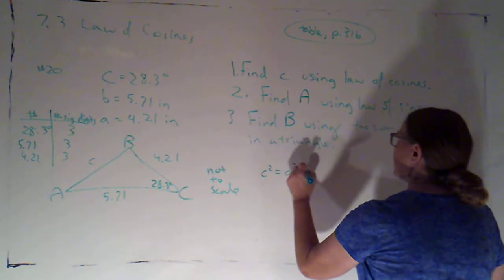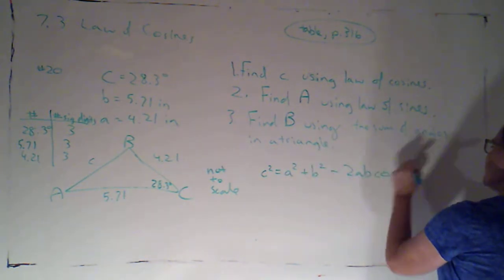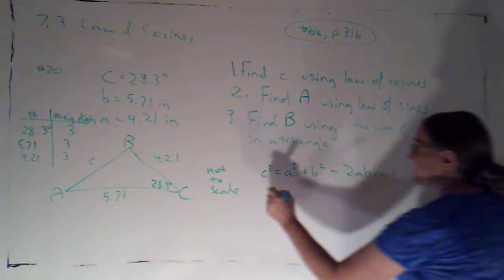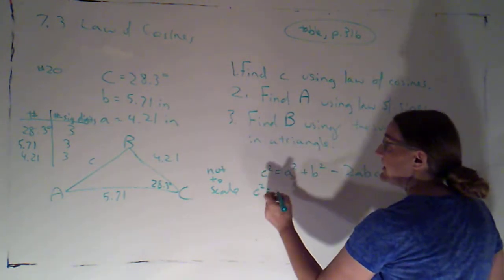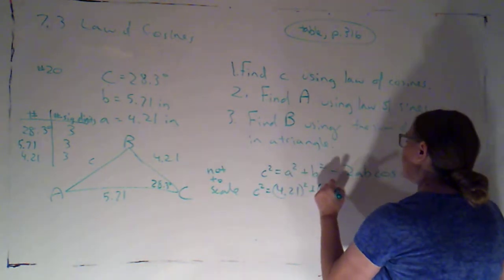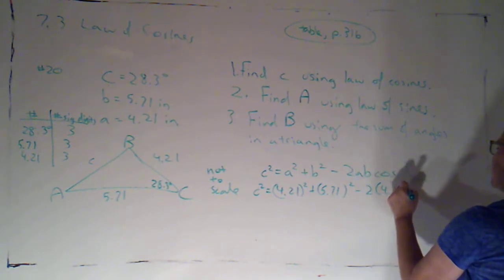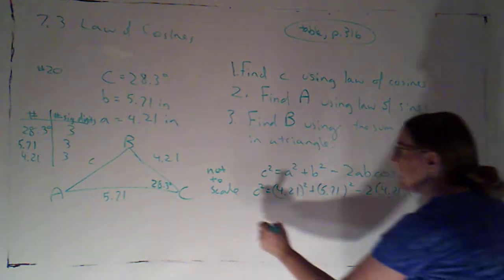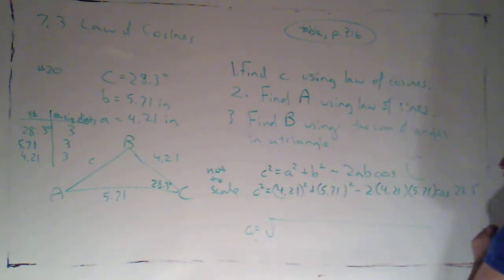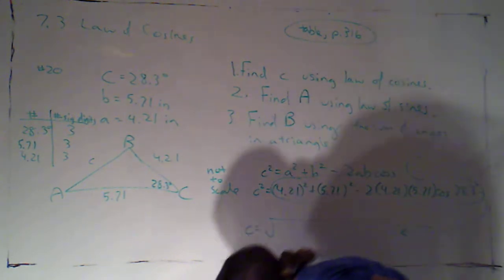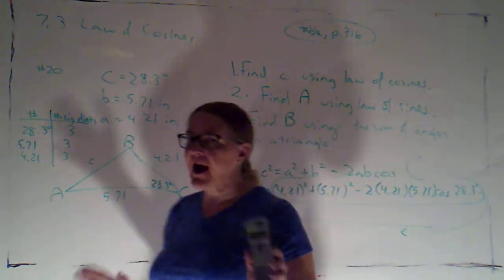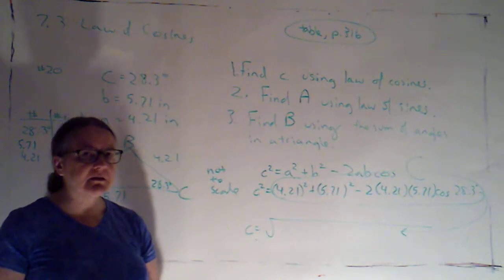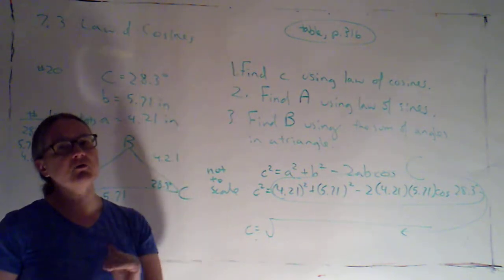So, we'll say c squared is a squared plus b squared minus 2ab times cosine of the angle c. Now, I'm going to just plug in. So, c squared is 4.21 squared plus 5.71 squared minus 2 times 4.21 times 5.71 times cosine of 28.3 degrees. Now, c is going to be the square root of this mess, okay? I'm not going to bother to write it again.